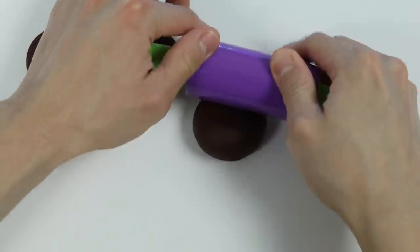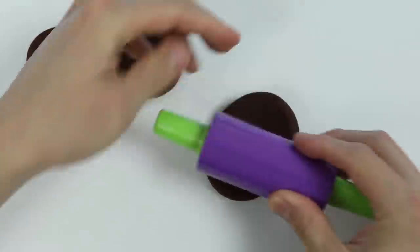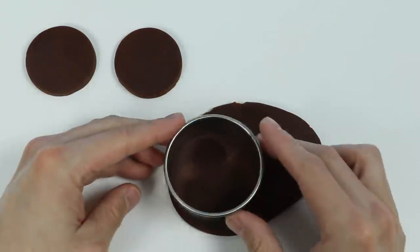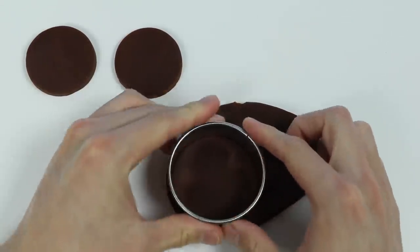Now let's roll out some more brown Play-Doh. Now we'll make one larger cake layer and one smaller cake layer.